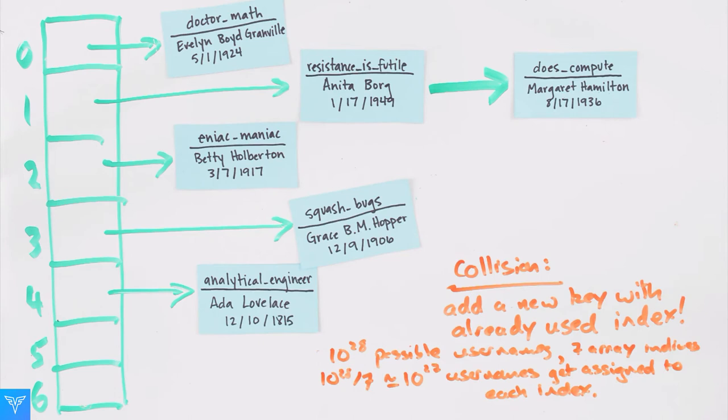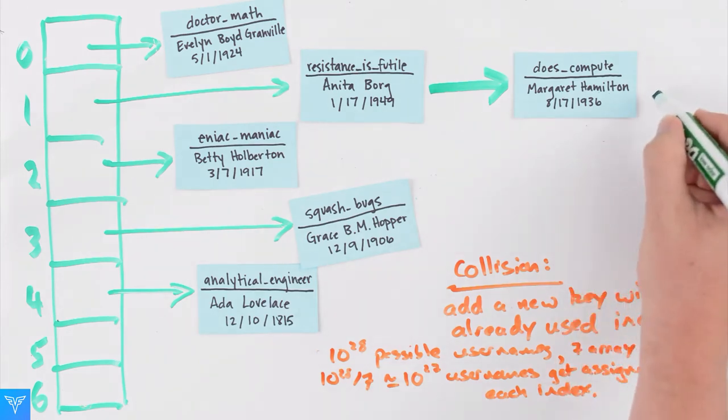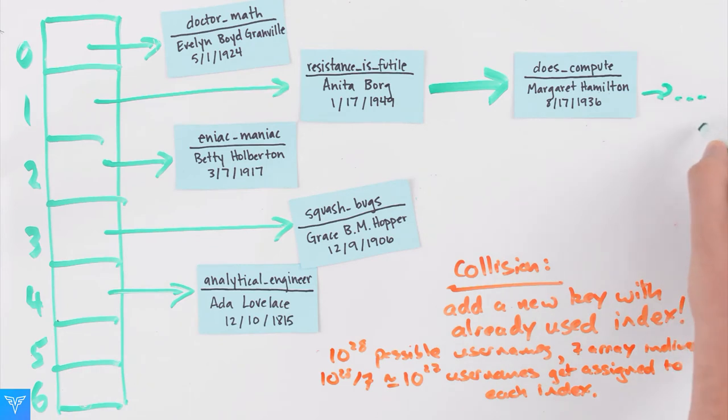It's always possible that you're the unluckiest person using the hash table, and that every single element you add gets assigned to the same index. In that case, your hash table has become a linked list. The good news is if you find yourself in that situation, you can always go ahead and change the hash function to one that does a better job spreading out the data you're encountering.